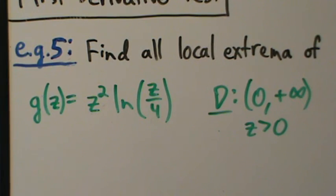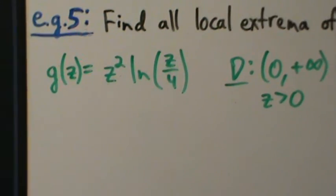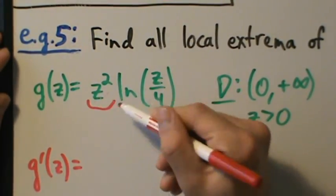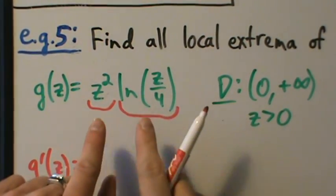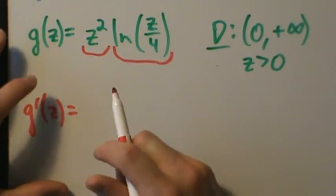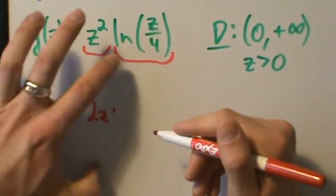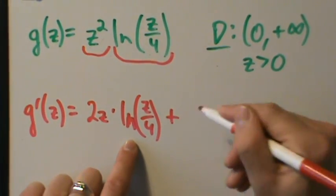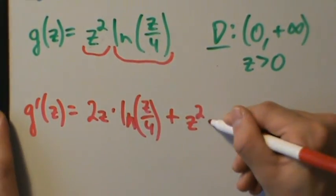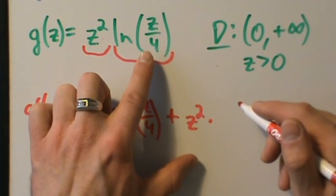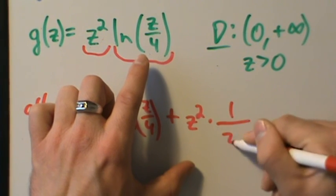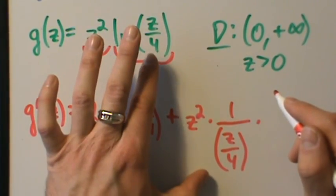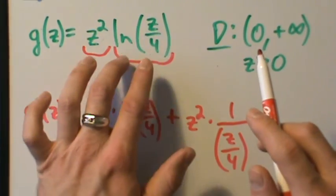Let's go ahead and do that. g prime of z equals — notice we have a product here: z squared is our first function, natural log of z over 4 is our second. We're going to do a product rule. The derivative of the first is 2z, times the second, which is natural log of z over 4. The derivative of natural log of a thing is 1 over that thing times the derivative of that thing — a chain rule. Z over 4 is sitting inside of natural log, so we apply the chain rule.